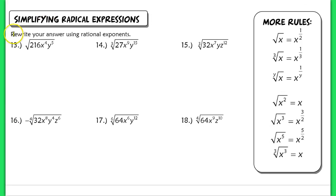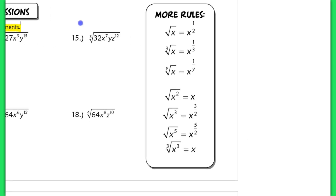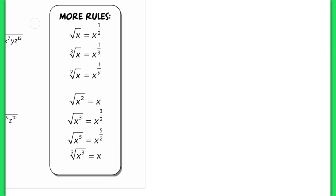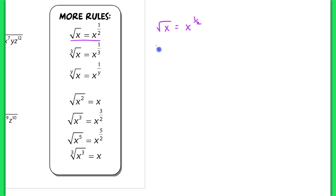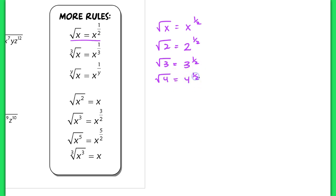The next objective is to write radical expressions using rational exponents. The square root of x equals x to the 1 half power — you drop the radical and rewrite using a rational exponent. For example, the square root of 2 is 2 to the 1 half, the square root of 3 is 3 to the 1 half, and the square root of 4 is 4 to the 1 half. The first two are hard to evaluate without a calculator, but 4 to the 1 half can be rewritten.